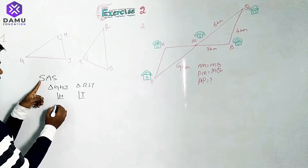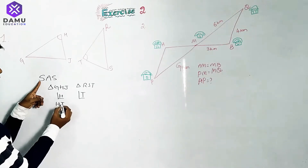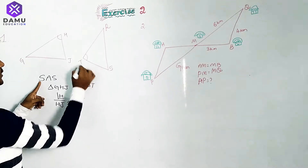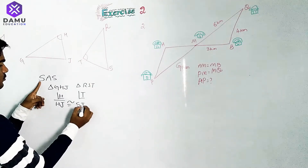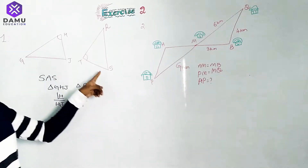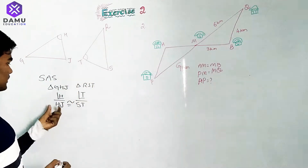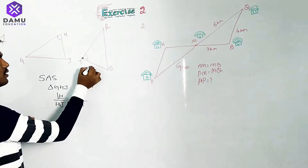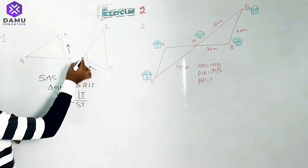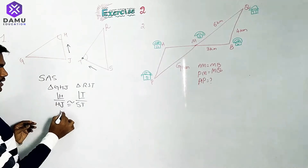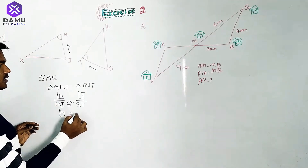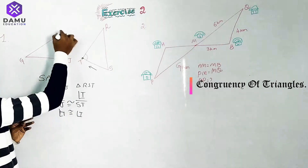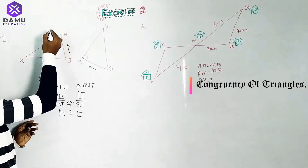First, side HJ is congruent to ST — one side is established. After that, we proceed with the angle: angle H is equal to angle T.